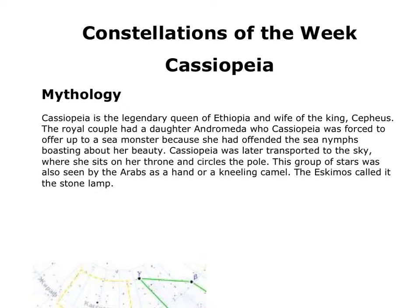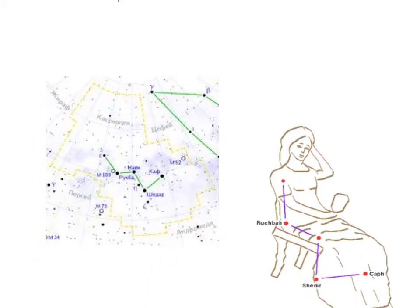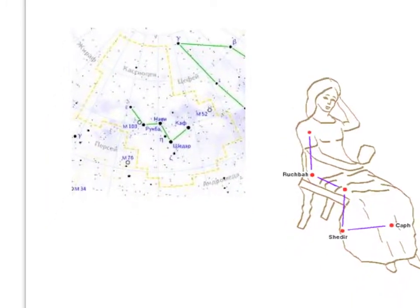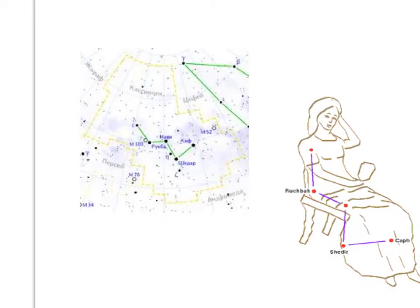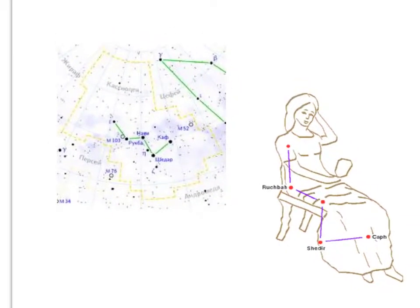And so there are times of the year when she is sitting on her throne upright, and then there are times of the year when she was upside down on her throne. So this is Cassiopeia. She is the famous, I'll pull up the pointer here. If you ever see the W in the nighttime sky or an M, depending upon what time of year it is, that is Cassiopeia. And that is actually the throne that she's sitting on.